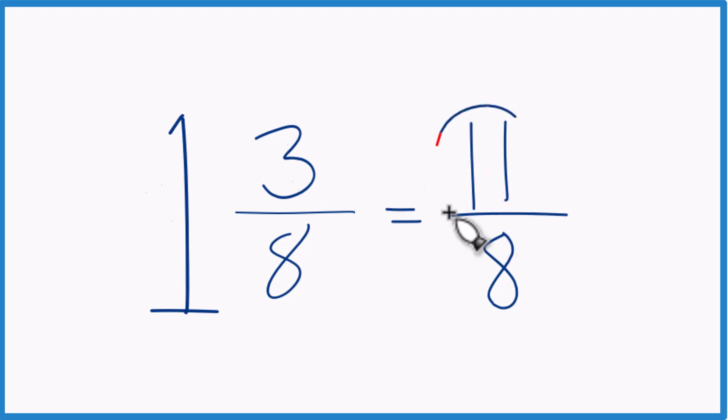It's improper because the numerator here is larger than the denominator. And these are equal. 1 and 3 eighths equals 11 eighths. They have the same value, it's just represented differently.